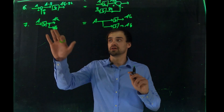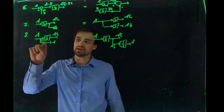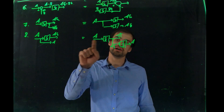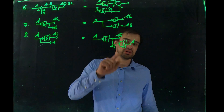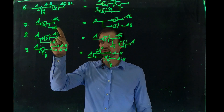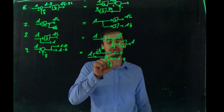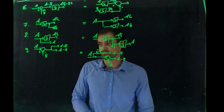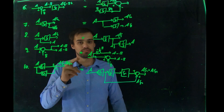Rule seven: input A through a transfer function gives A·G on both a main path and a branch. Equivalently, you can split the signal before the block and send both copies through G. Rule eight: if A is split off before G to give a plain A, the same result is achieved by first passing through G and then taking a branch through 1/G to recover A. Rule nine: the same logic applies to summing junctions — A minus B can be split or combined at different points in the diagram.